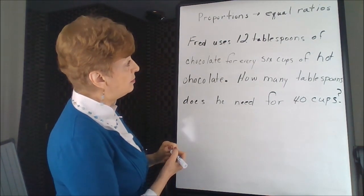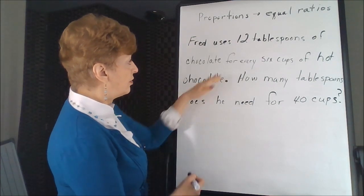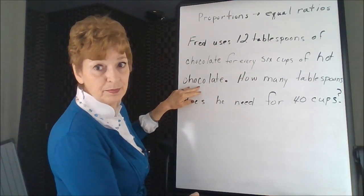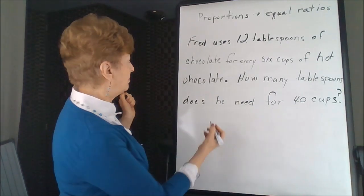Fred uses 12 tablespoons of chocolate for every six cups of hot chocolate. Apparently, he's making a lot of hot chocolate here.